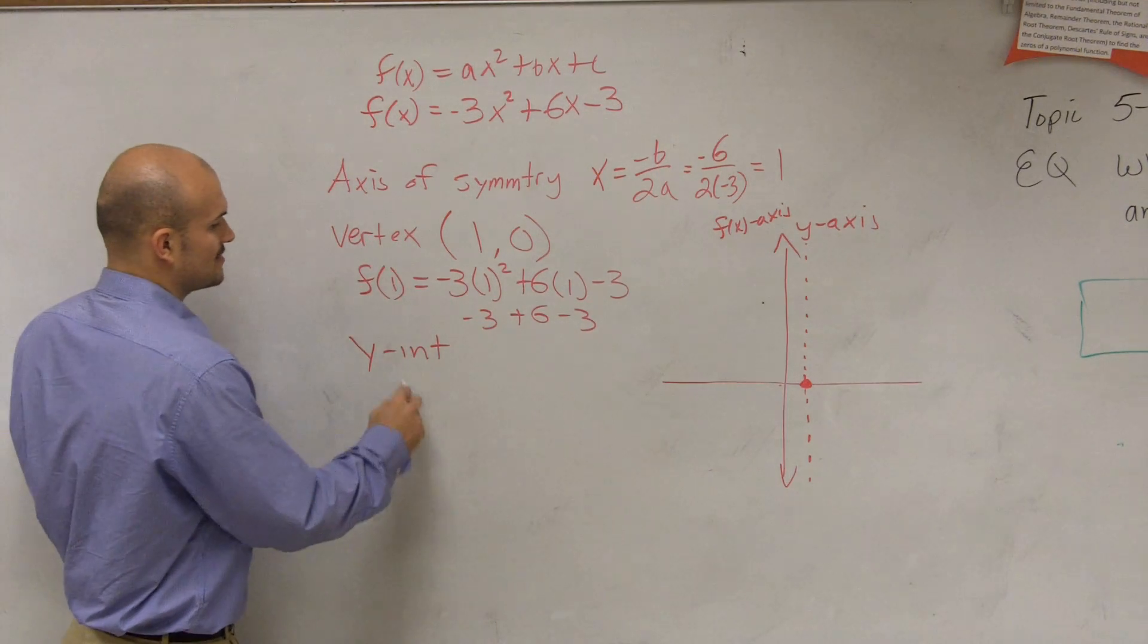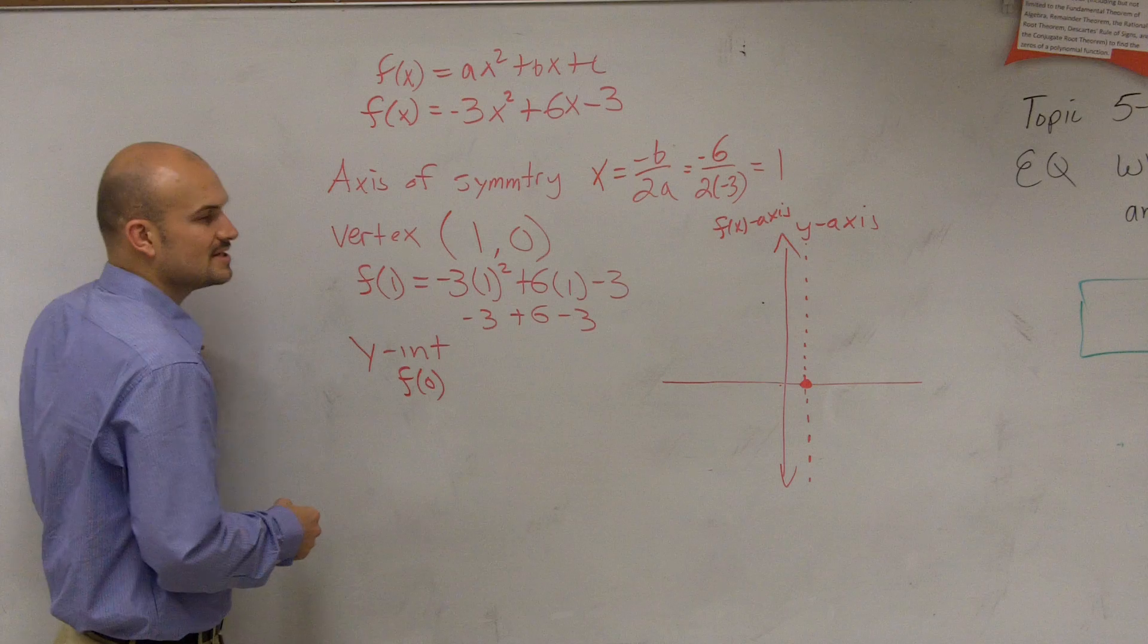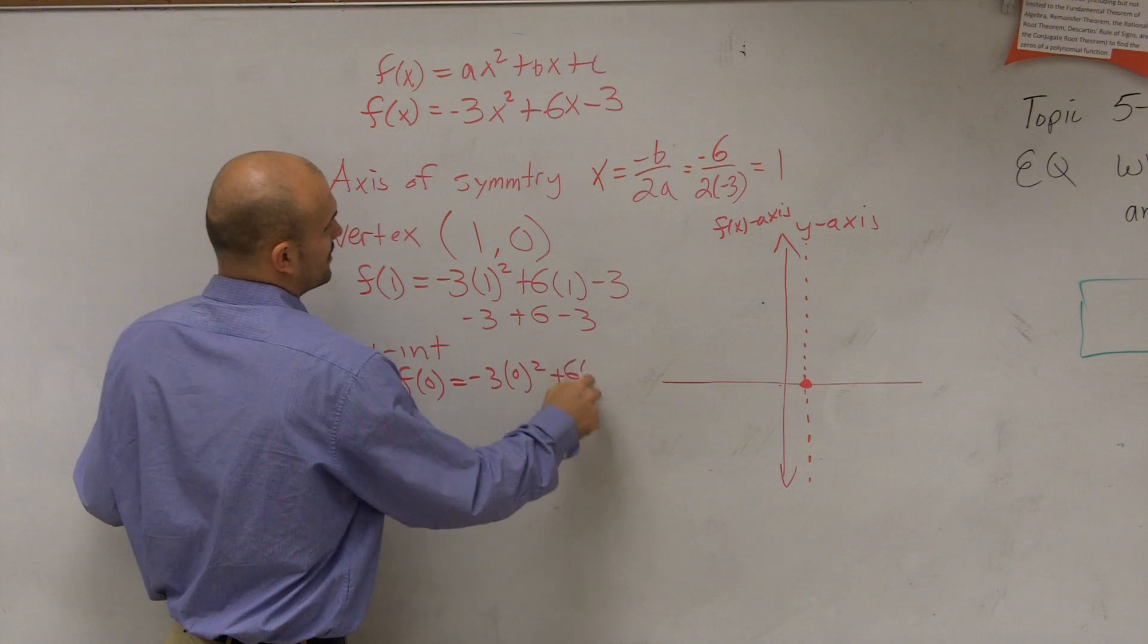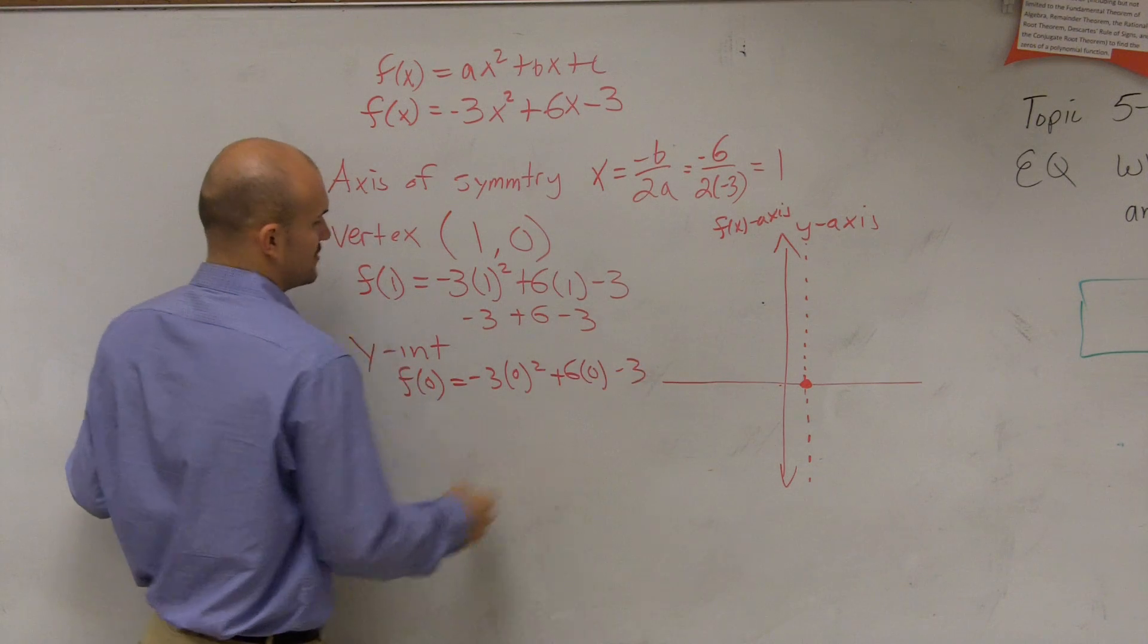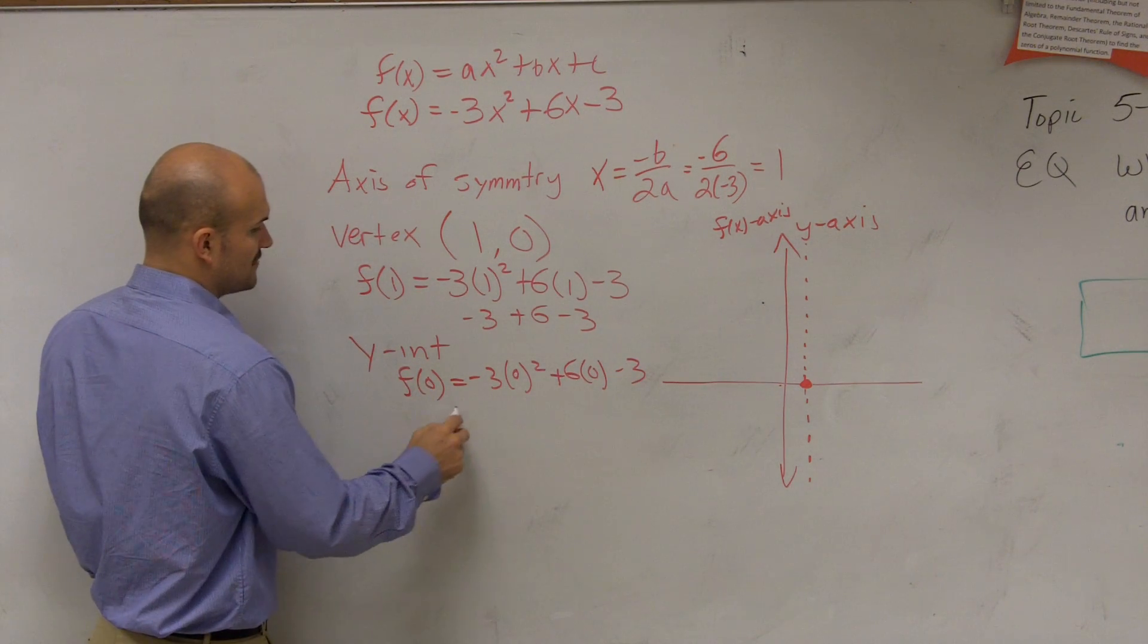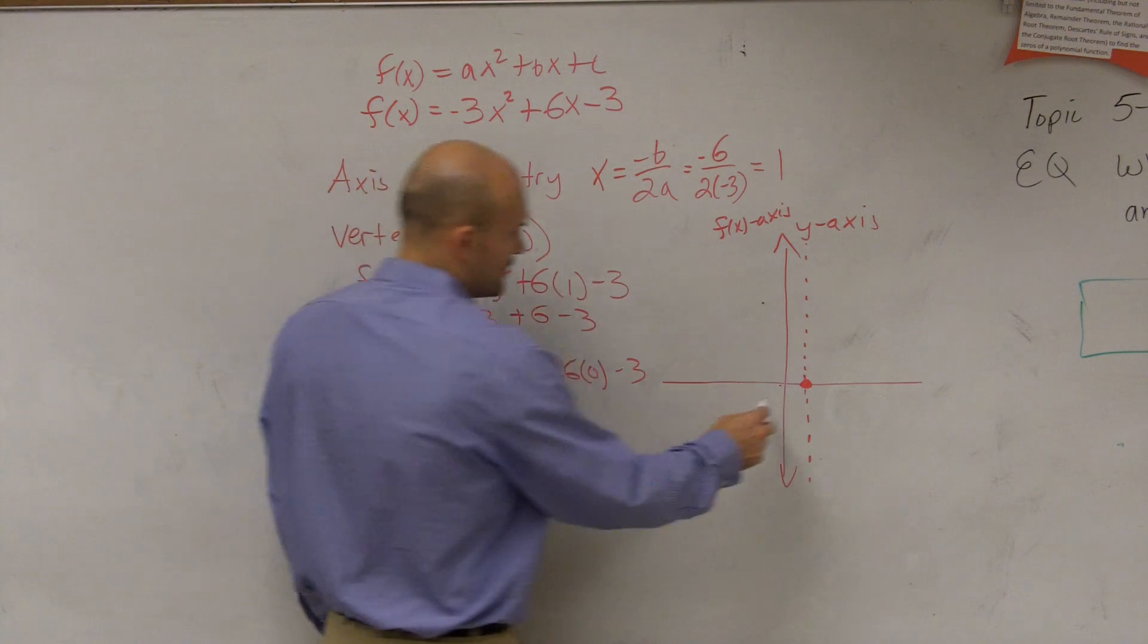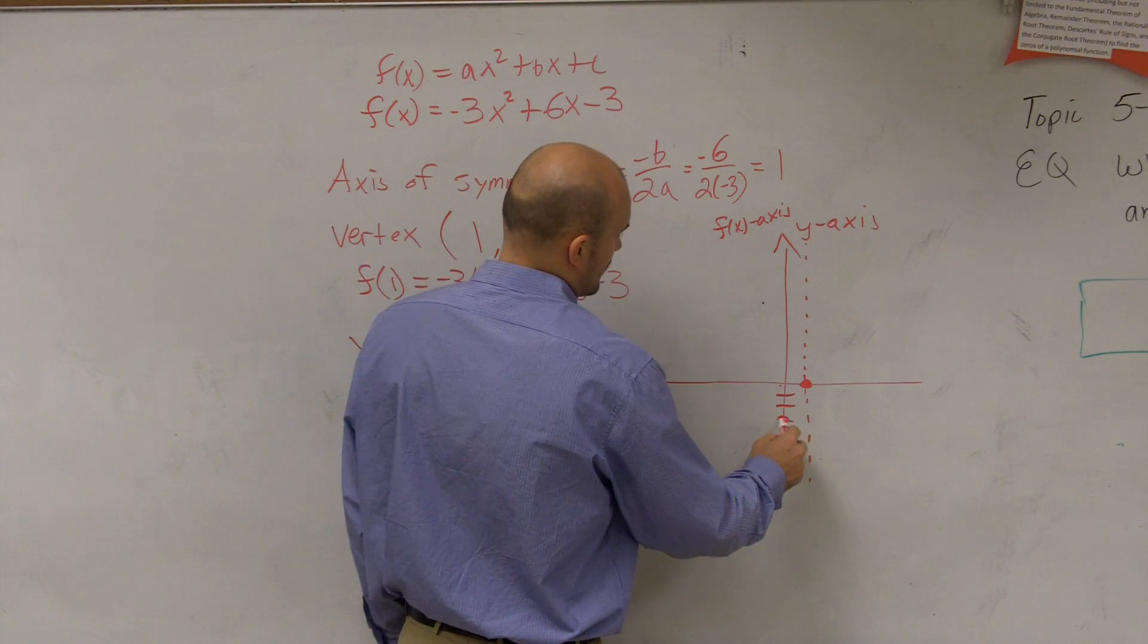So to find the y-intercept, what I'm going to do is I'm going to plug 0 in for x. So therefore, I have negative 3 times 0 squared plus 6 times 0 minus 3. Therefore, f of 0 equals negative 3. So I go down to negative 3, 1, 2, 3, and I make a dot.